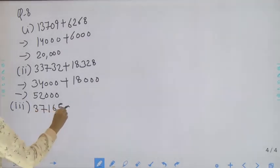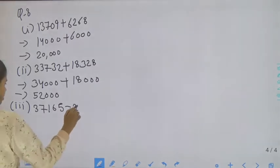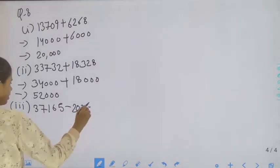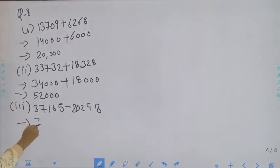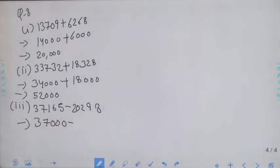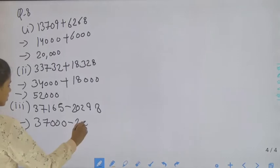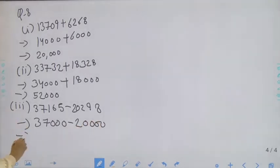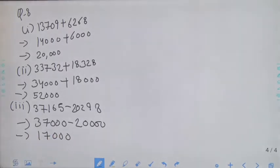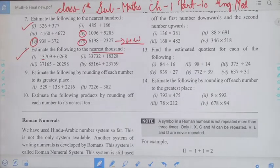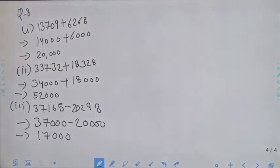Third part: 37,165 minus 20,298. Students, 37,165 will round off to 37,000 and 20,298 will round off to 20,000. So 37,000 minus 20,000 it will be 17,000. First, second, and third part — I hope you understand. The question asked us to estimate to the nearest thousand.